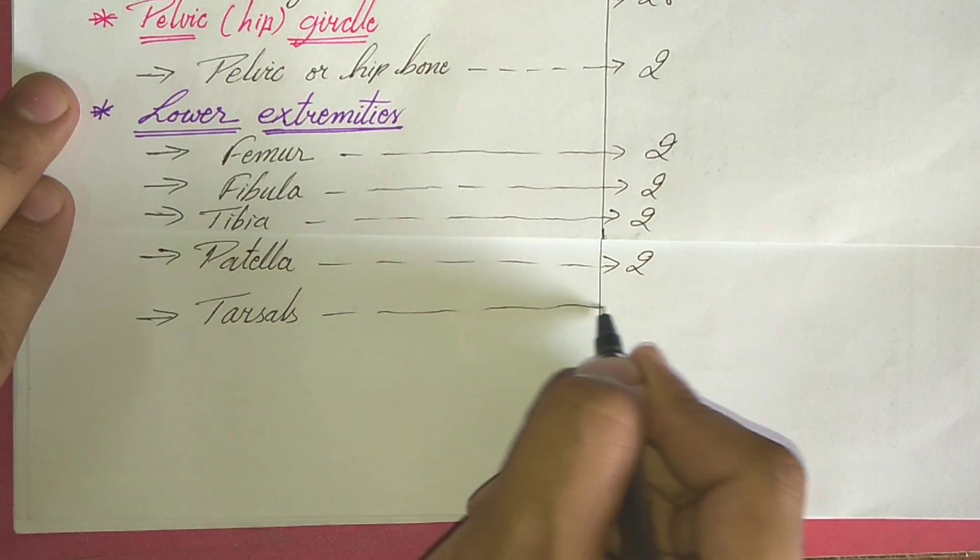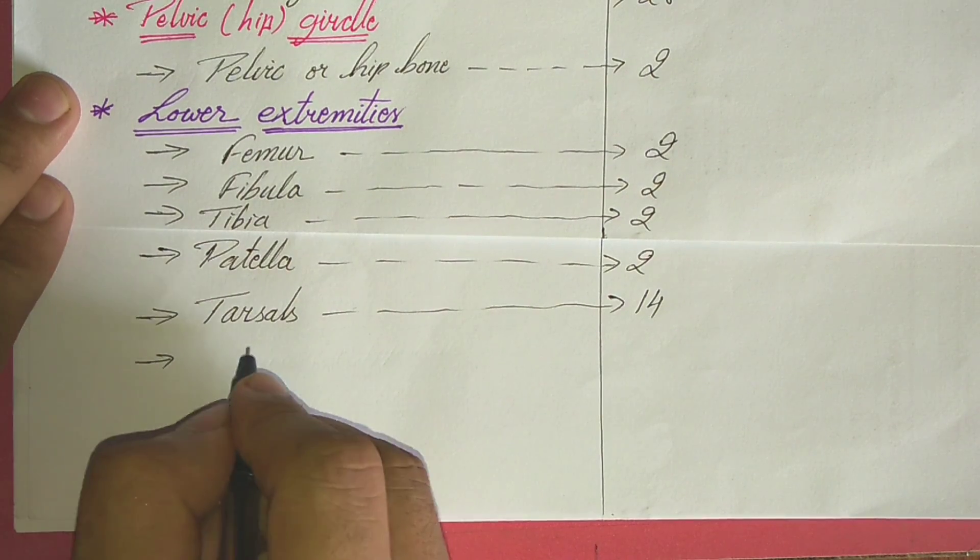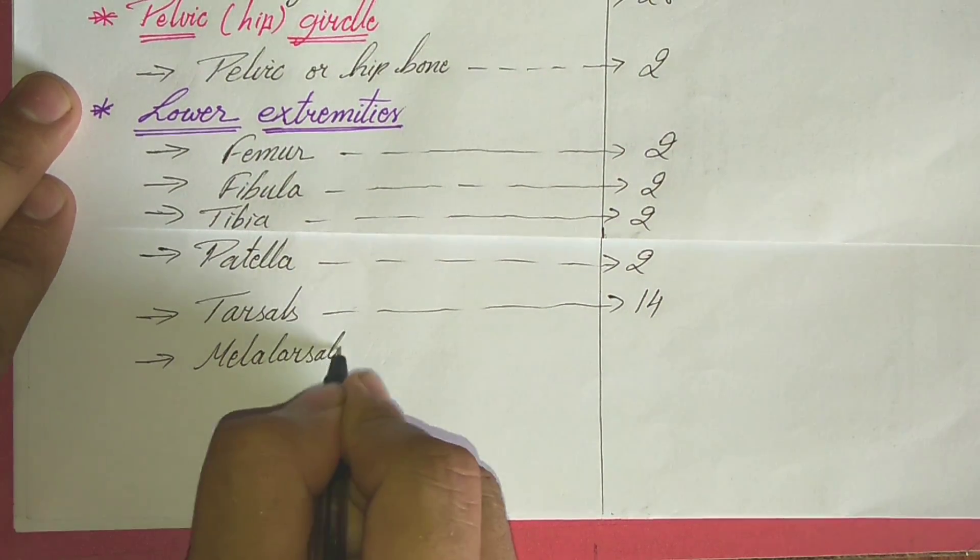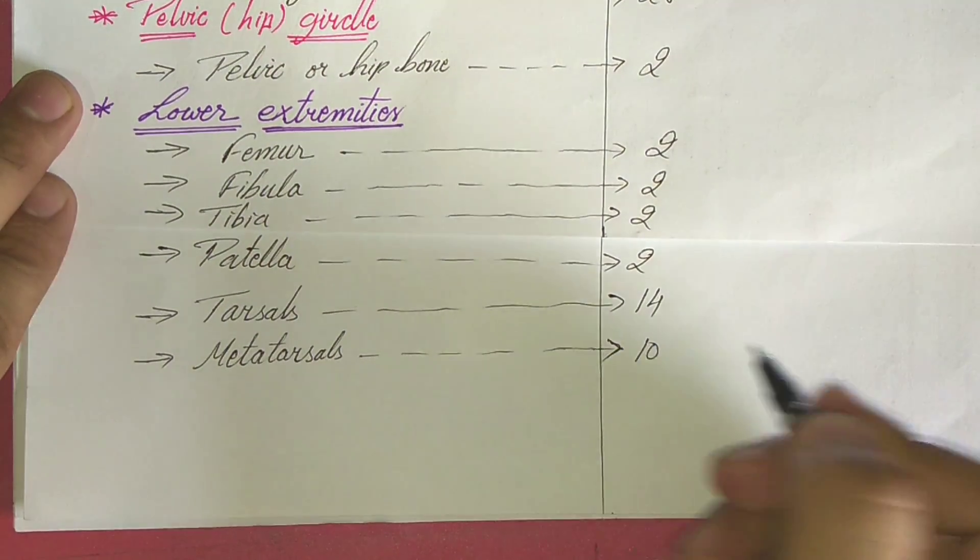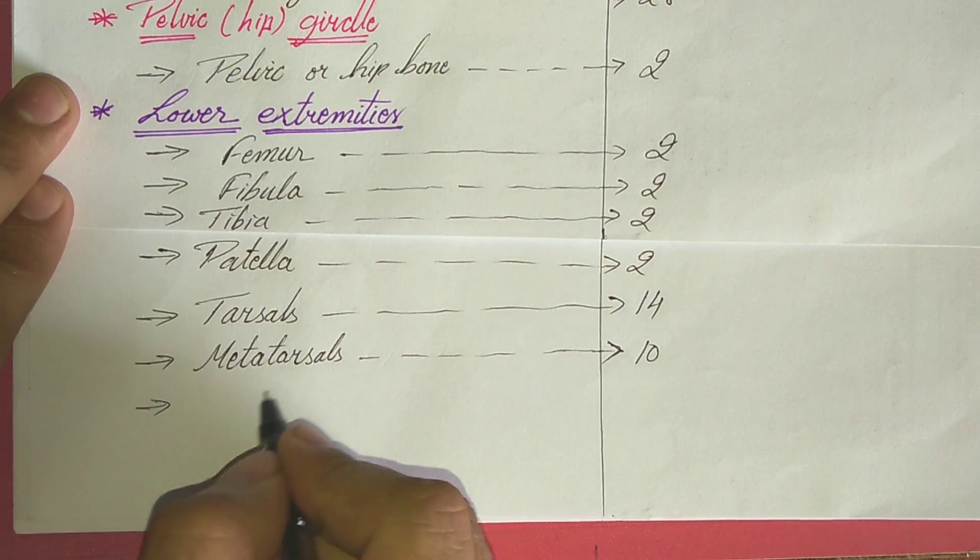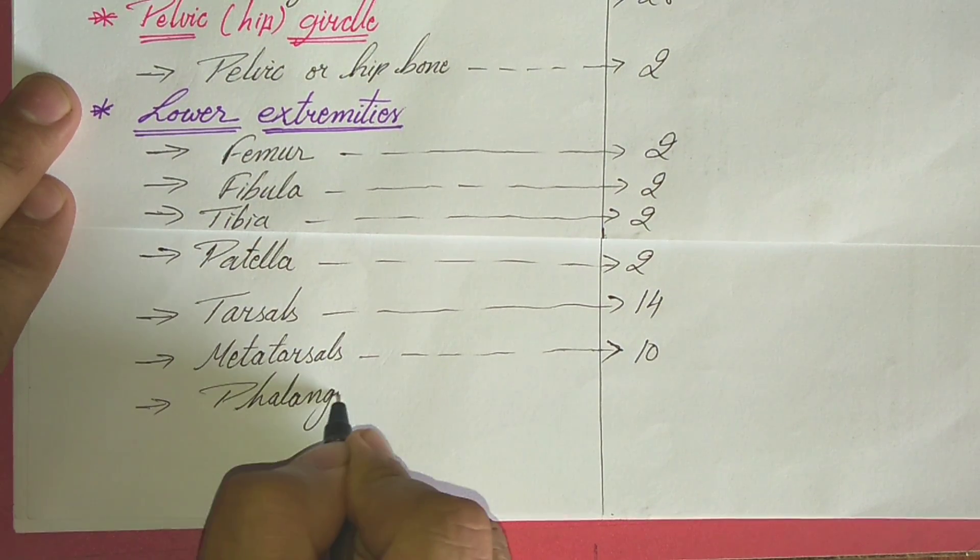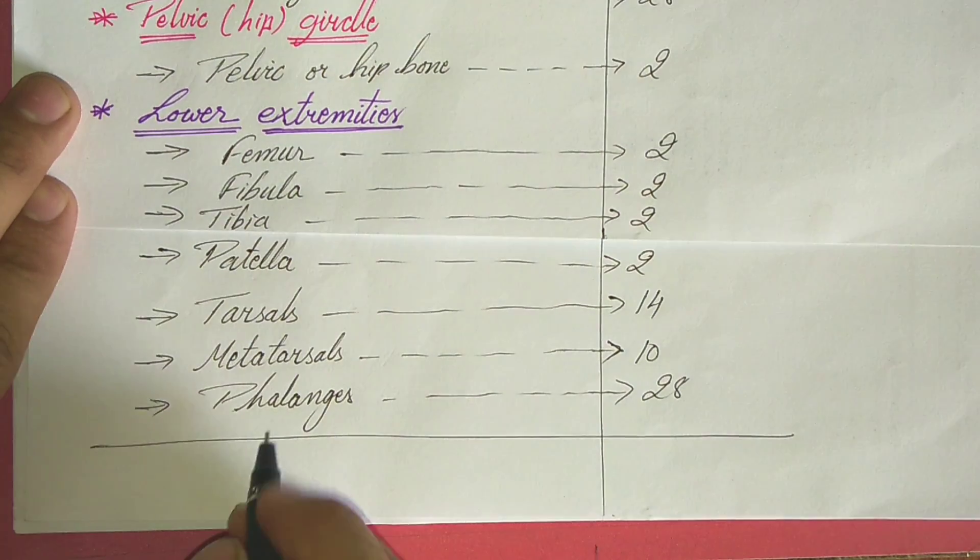Then tarsal bone, 14, seven on each side. Metatarsal bones, 10 metatarsal bones are present. Then phalanges, which is around 28.